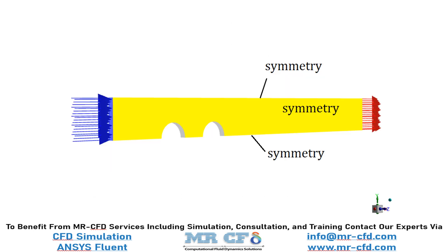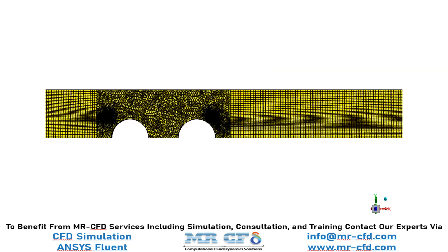The geometry of the present project is designed in ANSYS Design Modeler software. It should be noted that this geometry only consists of a segment of the heat exchanger. Since a heat exchanger usually has symmetry, this feature has been used, and instead of solving the flow in the whole heat exchanger, the analysis has been done only in a part of it. The meshing is carried out using ANSYS meshing software, with the mesh structured in upstream and downstream parts and unstructured in the main part. The element count is equal to 890,710.